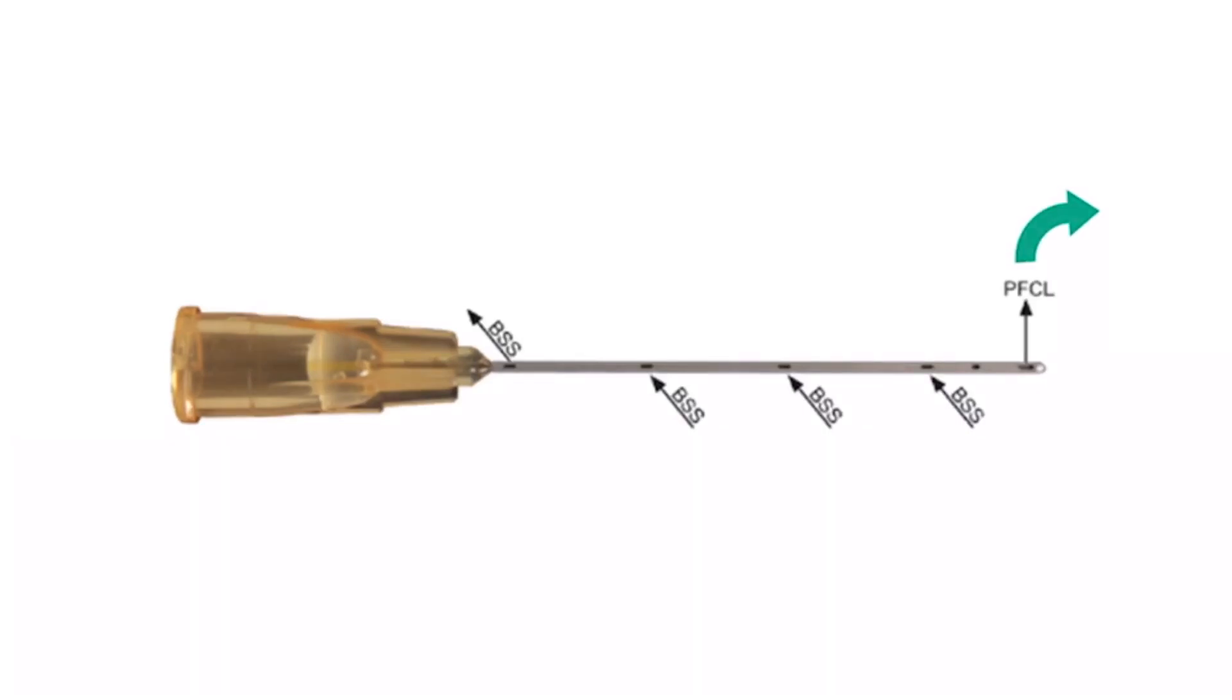These special cannulas allow the exit of perfluor through the tip, while side ports facilitate the egress of BSS. This reduces resistance during injection and minimizes the formation of fish eggs.